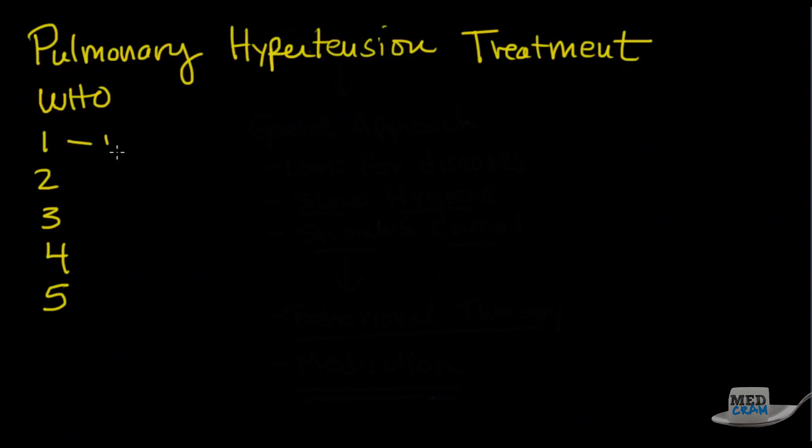Group 1 we said was idiopathic pulmonary arteriolar hypertension, and the other ones, for instance, the collagen vascular diseases, the drugs, the toxins, those sorts of things.